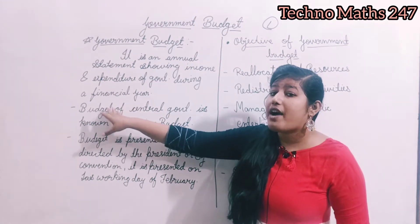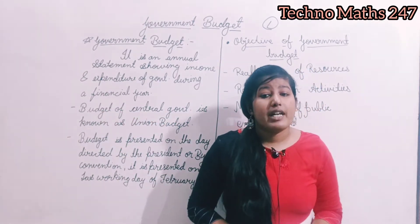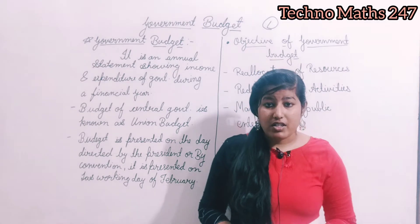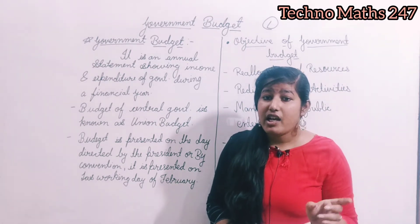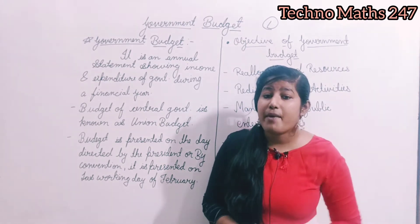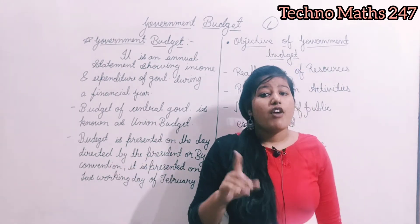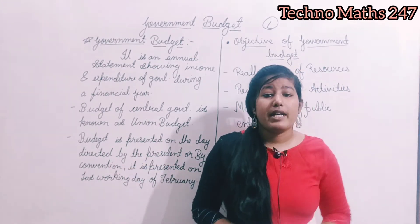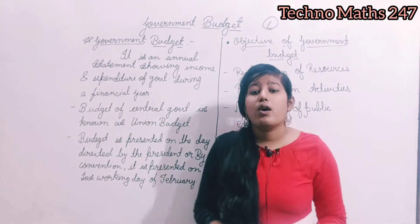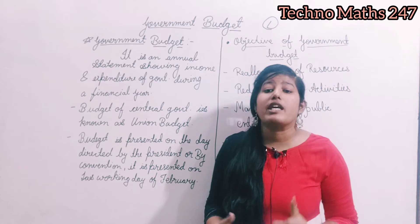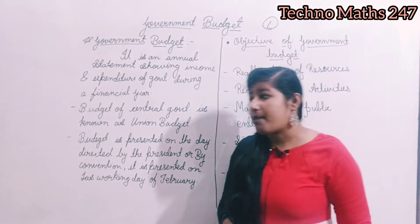During the financial year — financial year हमारे यहाँ होता है 1st April to 31st March। जैसे हमारा calendar year होता है 1st January to 31st December, वैसे ही हमारा financial year होता है from 1st April to 31st March। इस financial year को हम accounting year भी बोलते हैं, fiscal year भी बोलते हैं — इसके बहुत से नाम होते हैं।